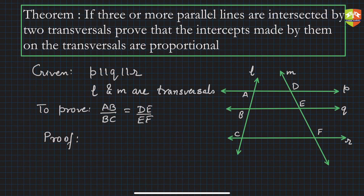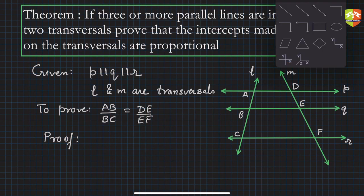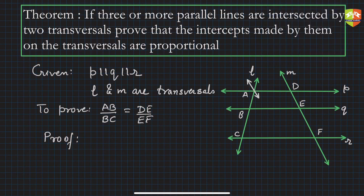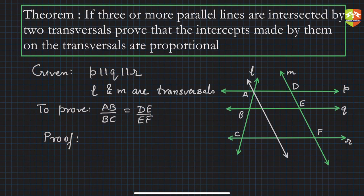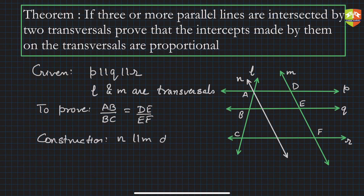Construction: Draw a line N parallel to M passing through A, intersecting lines P, Q, and R at points A, G, and H respectively.